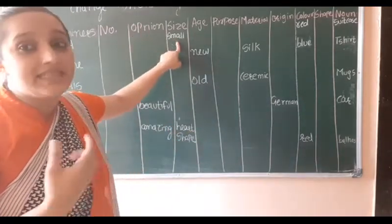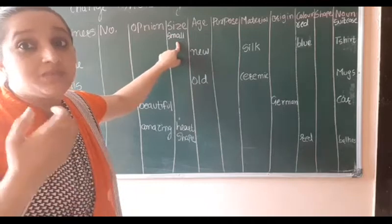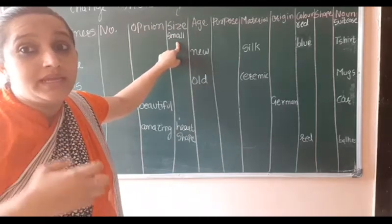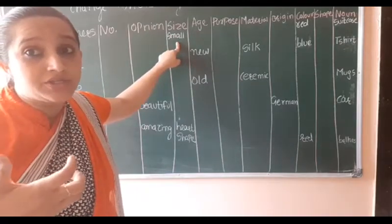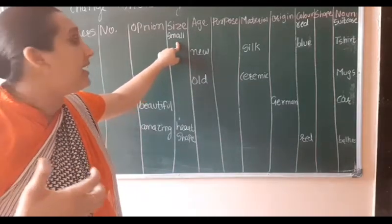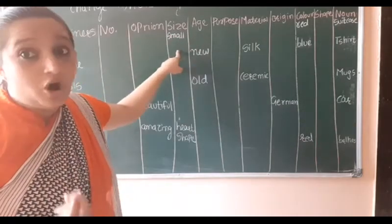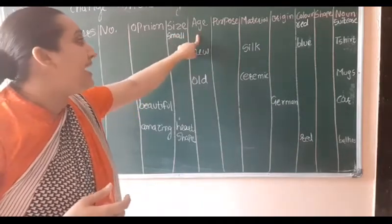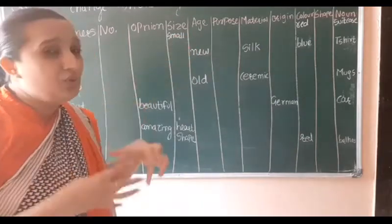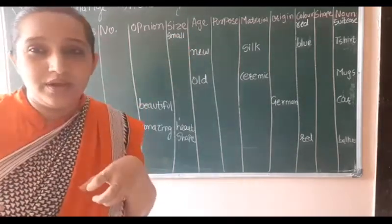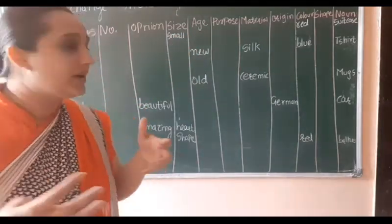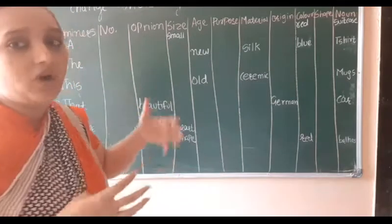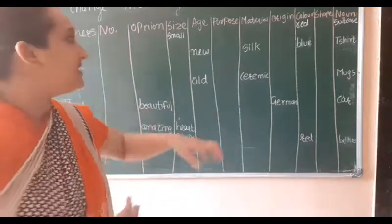Next will be size — small, big, large, long. Next will be age — new, old. These come under age.